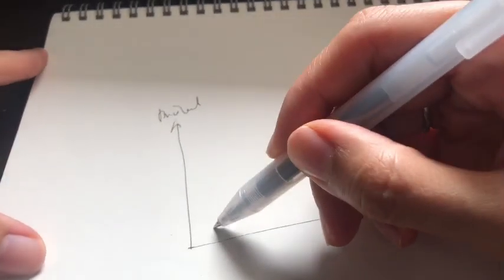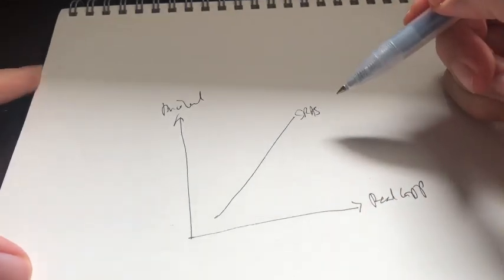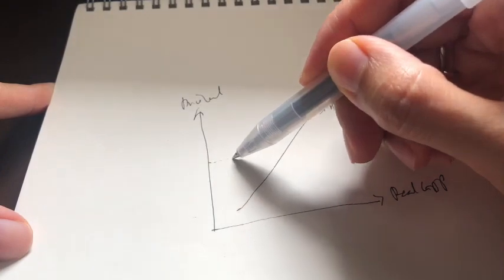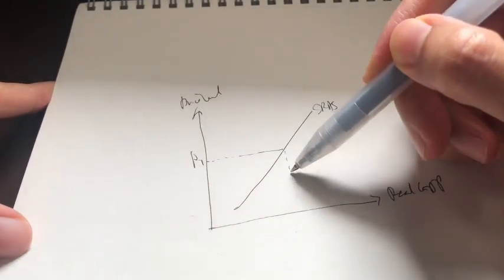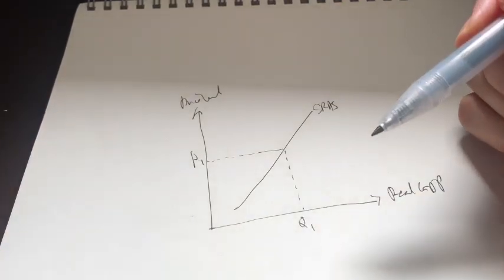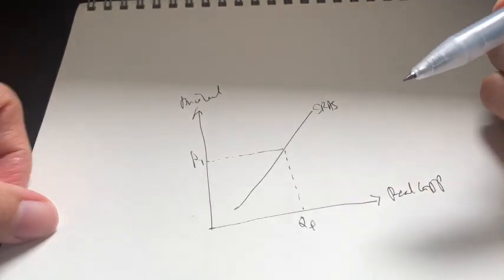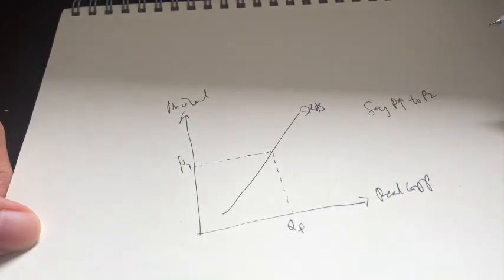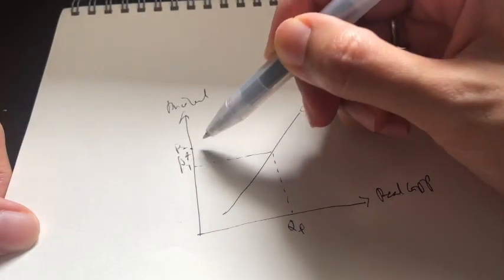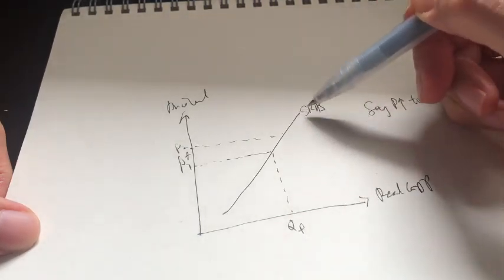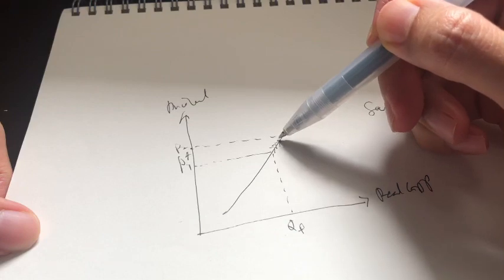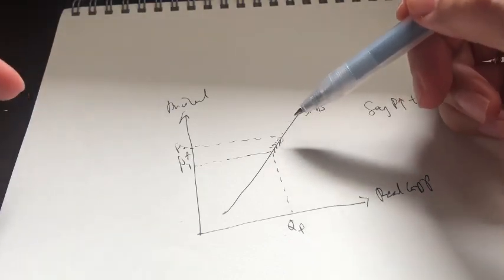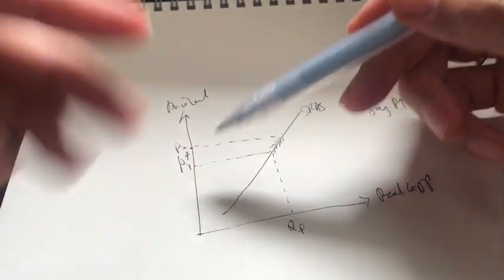We begin our discussion with a short run aggregate supply curve, because the long run is made up of many short runs. Initially, this is our first short run aggregate supply curve. Let's choose one price level at random — say this is P1. At P1, the GDP level is Q1. For simplicity, let's assume that at P1, this is the full employment GDP level. Now say the price level increases to P2.